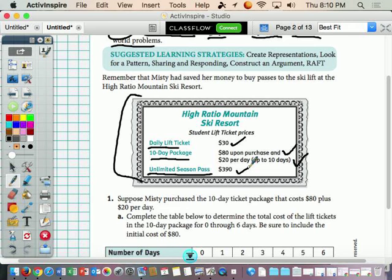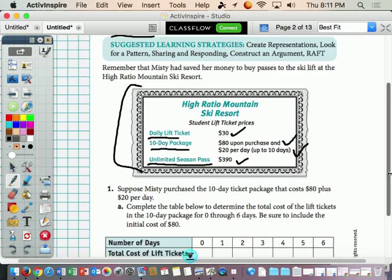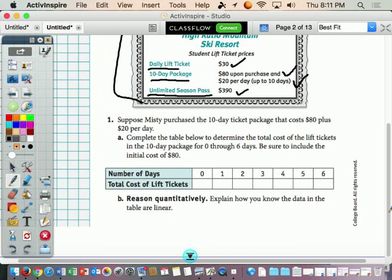Suppose Misty purchases the 10-day ticket package that costs $80 plus $20 per day. Complete the table below to determine the total cost of the lift ticket in the 10-day package for zero through six days. Be sure to include the cost of $80. Pause and see if you can do this by yourself.